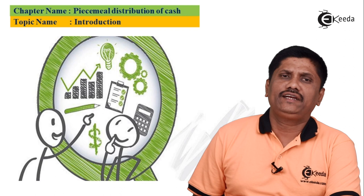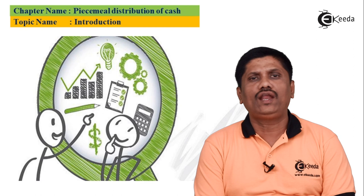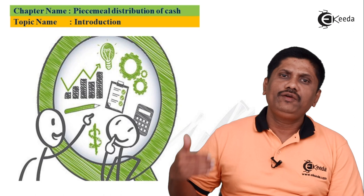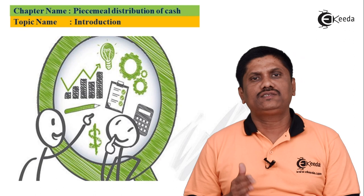We know it is difficult to sell all assets on one single day, and it is also difficult to pay all liabilities on one single day. Practically, we sell assets gradually and pay liabilities as and when money is available. This approach of realizing assets and paying liabilities is termed piecemeal distribution of cash.